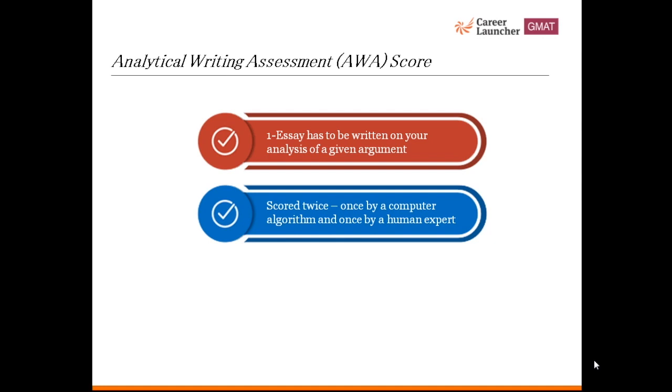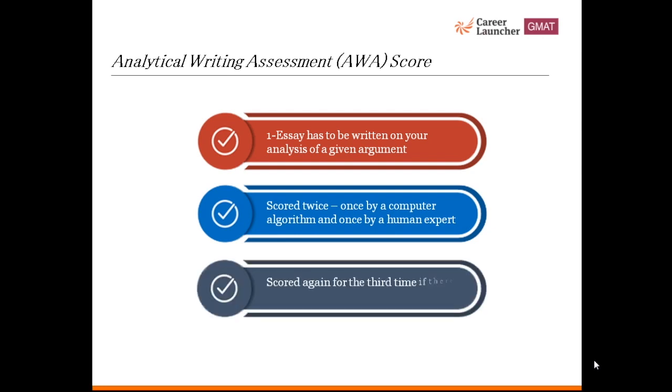The test is once graded by a computer algorithm and once by a human expert which takes time. The final score will be the average of two graders. You will see your AWA scores in the official GMAT scorecard which can take up to 20 days to come after the test. If it is found that there is a significant difference in human score and computer score, the essay is again evaluated for the third time by a human expert.